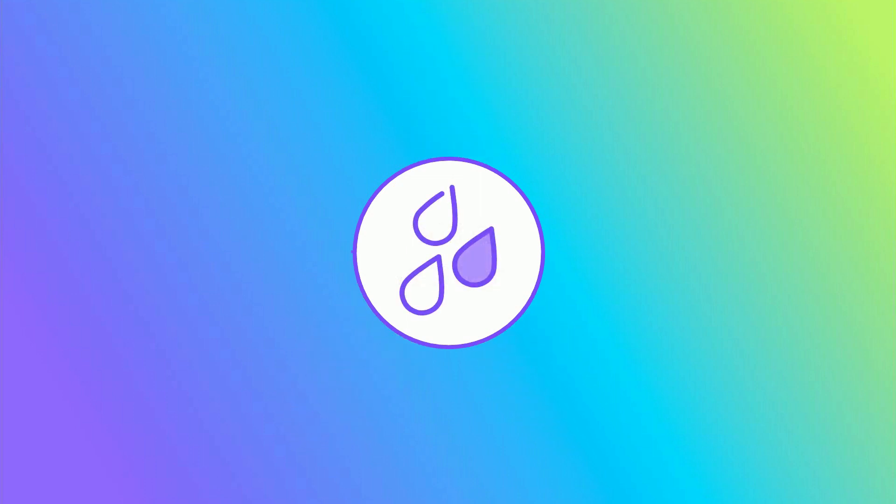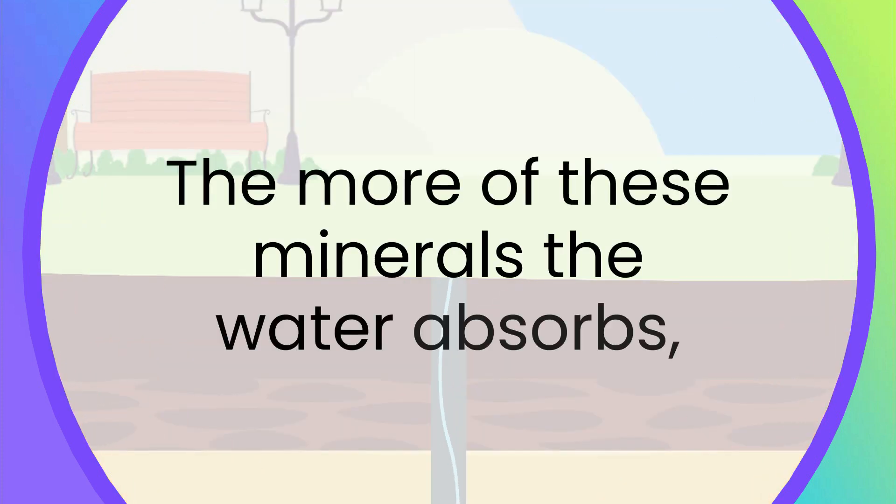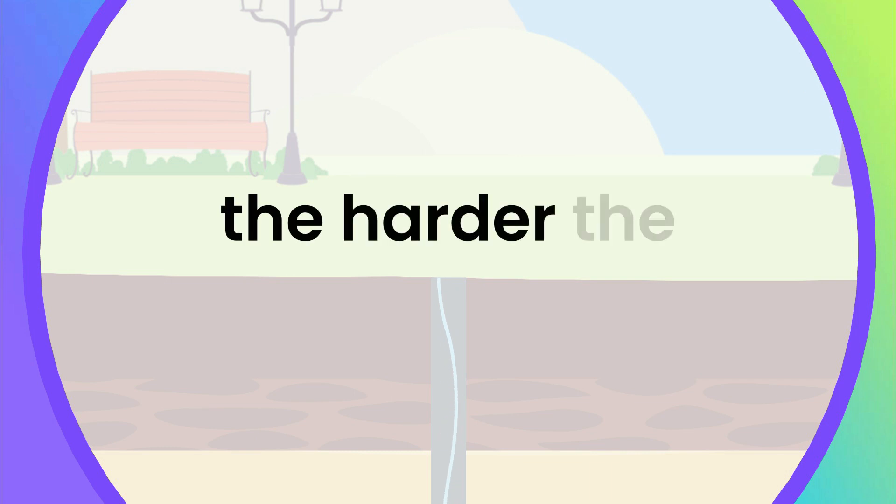Hard water contains naturally occurring minerals such as calcium and magnesium that are absorbed as water makes its journey through soil and rock into underground basins. The more of these minerals the water absorbs, the harder the water becomes.